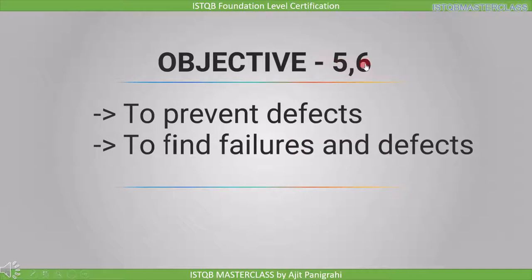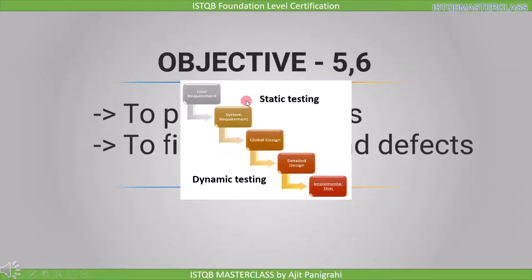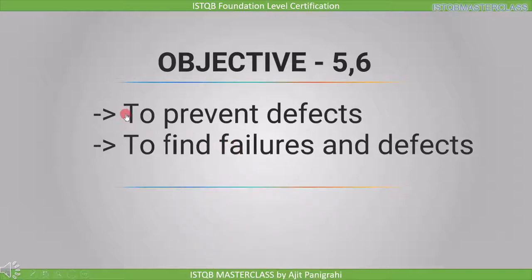Let's discuss objectives 5 and 6 together. Objective 5 is to prevent defects, and objective 6 is to find failures and defects. If you find a defect in the requirement stage, you prevent that defect from going to the next stage. We need to find the defect or failure in the same stage in which they are tested; otherwise, the defect will travel to the next stage and it will be more costly to fix. This is why preventing defects and finding failures and defects are important objectives of testing.